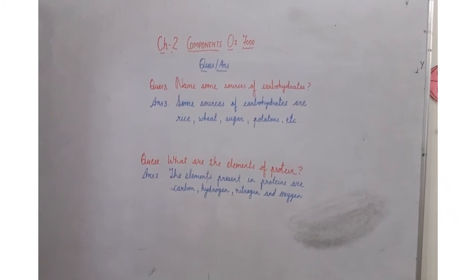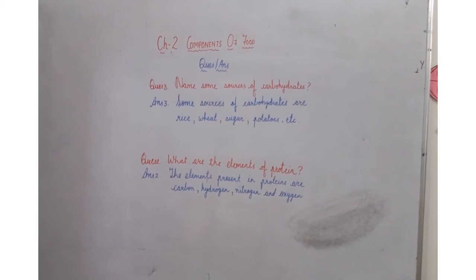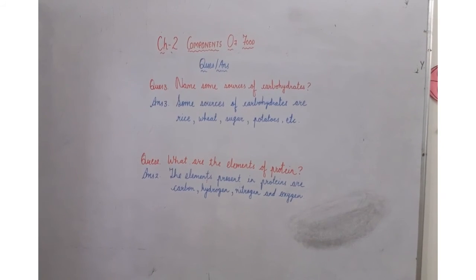So let's revise the question answers once again. The first question was name the major nutrients in our food. So there are five major nutrients in our food which are carbohydrates, proteins, fat, vitamins and minerals.